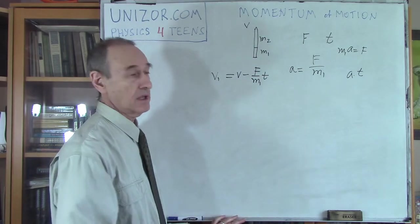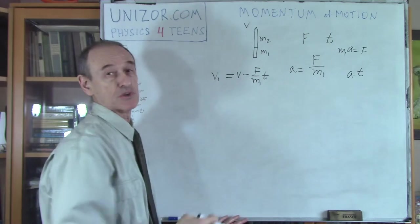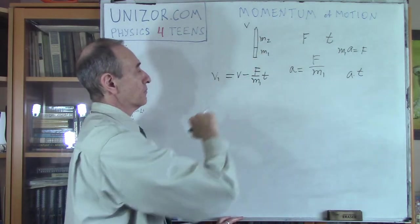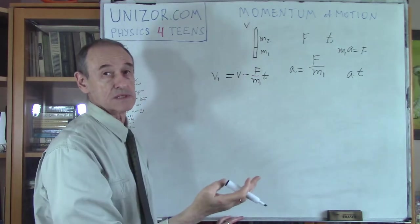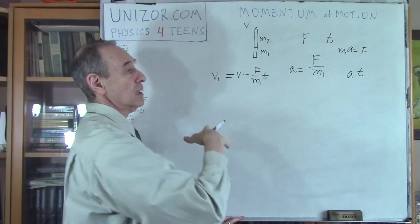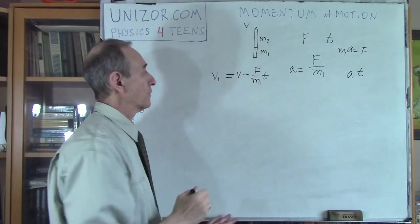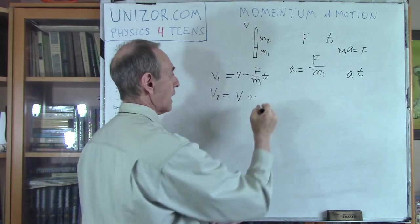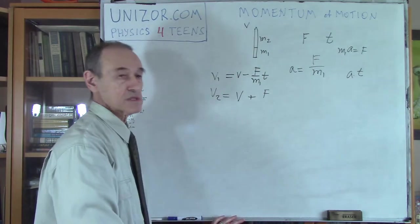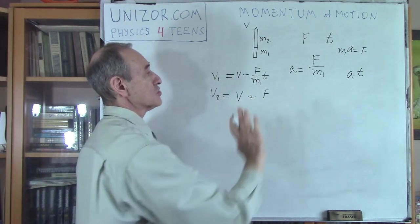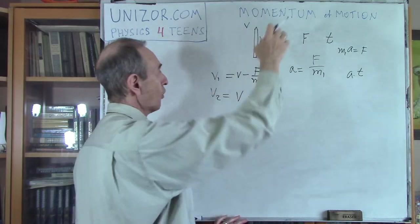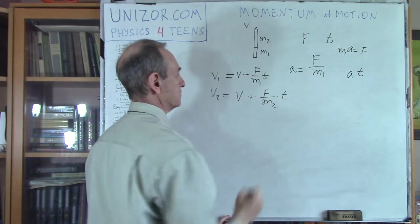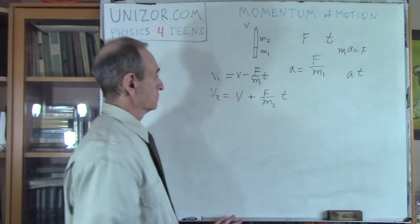During time t, if I have acceleration, my speed would increase or decrease depending on the sign of acceleration by a times t. In this case, since the rocket moves this direction and we're pushing the first stage backwards, it's minus. So it's V minus F divided by m1 times t. This is my speed at the end of this process. If we pushed really hard, it may go completely in the opposite direction. If we pushed slightly, it will just separate and move slower than the second stage. As far as the second stage is concerned, initially it also has speed V.